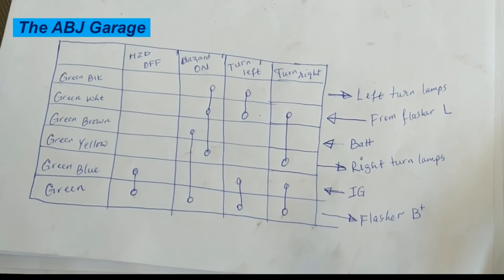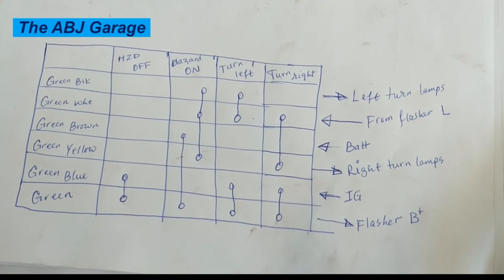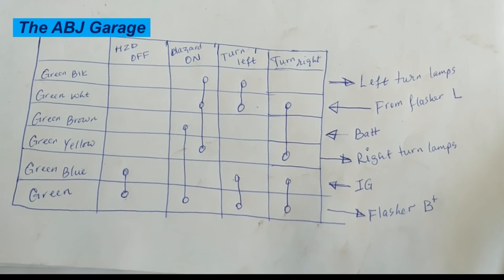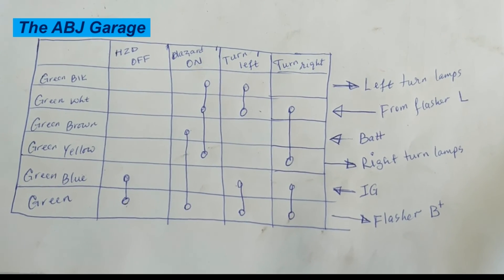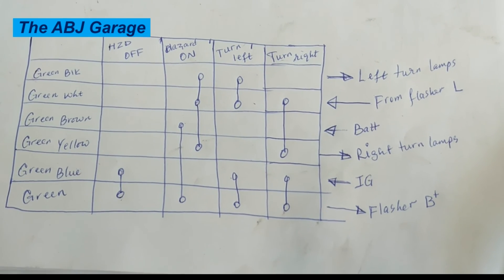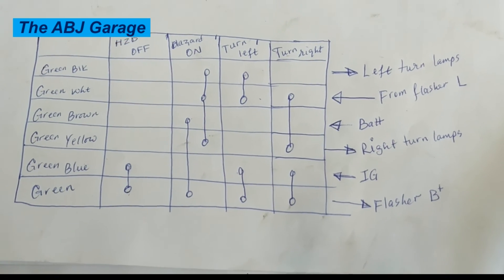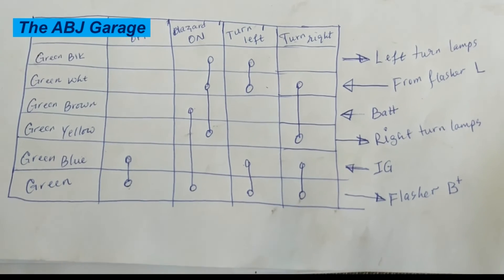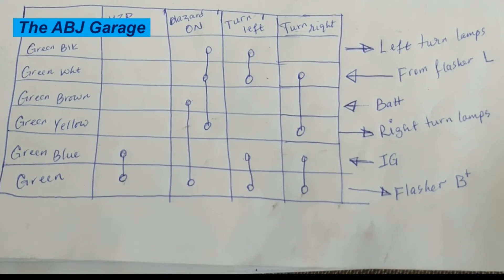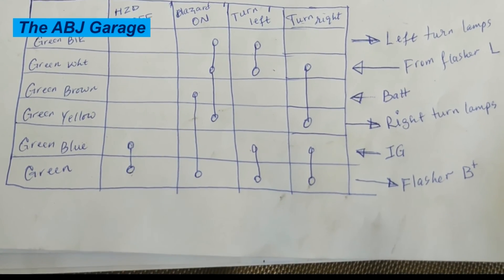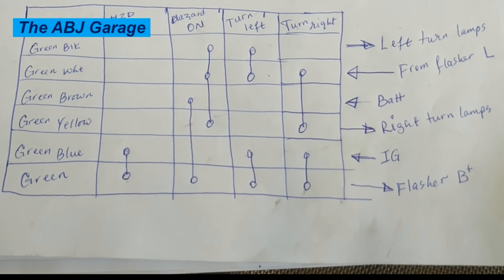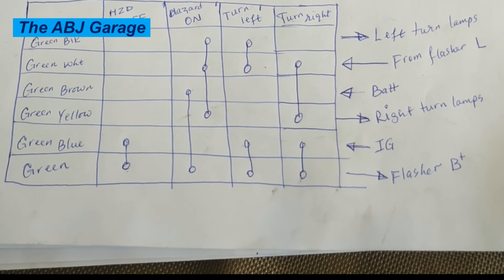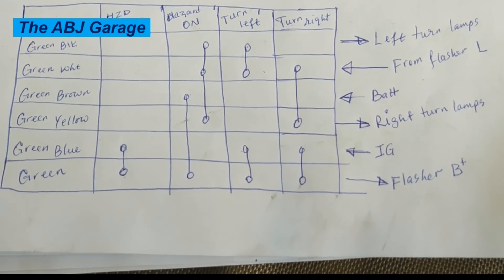This is how you can identify the different terminals of the hazard and turn signal switch lines. Now that we have identified the different lines, in our next video we will show you how the connection is done. I hope you have clearly understood how the lines can be identified. Please stay tuned for more on how to construct the entire circuit and how it is operated. Till then, stay safe.